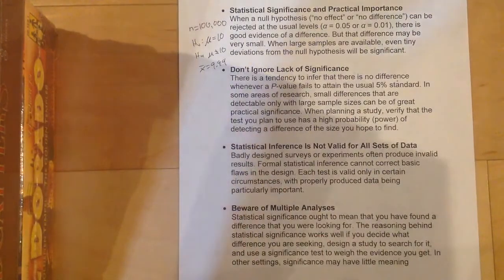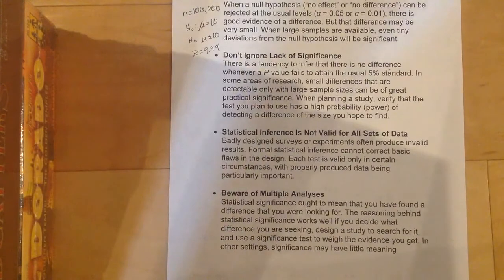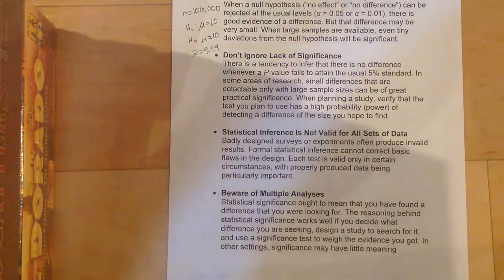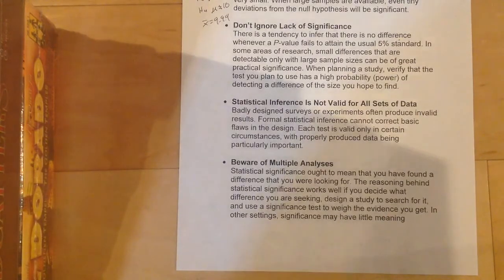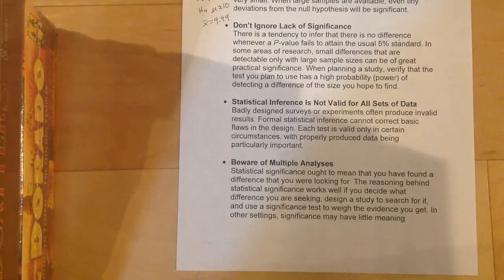Statistical inference is not valid for all sets of data. If you've got bad data, this isn't going to work — you can't massage it to fix it. If you have a biased sample, you've got to throw it out and start over. Also beware of multiple analyses: you should have a hypothesis and test it, not gather a whole bunch of data and run tests on everything. Because remember — you're going to make a mistake 5% of the time when using an alpha of 5%. If you test thousands of things just to see what's significant, you're going to get some type 1 errors that don't mean anything.